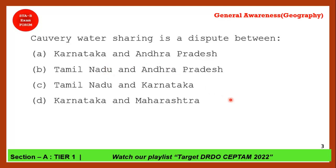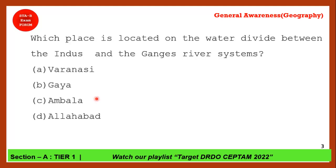Next question: Kaveri water sharing is a dispute between which of the following states? The correct answer is option C — Karnataka and Tamil Nadu.